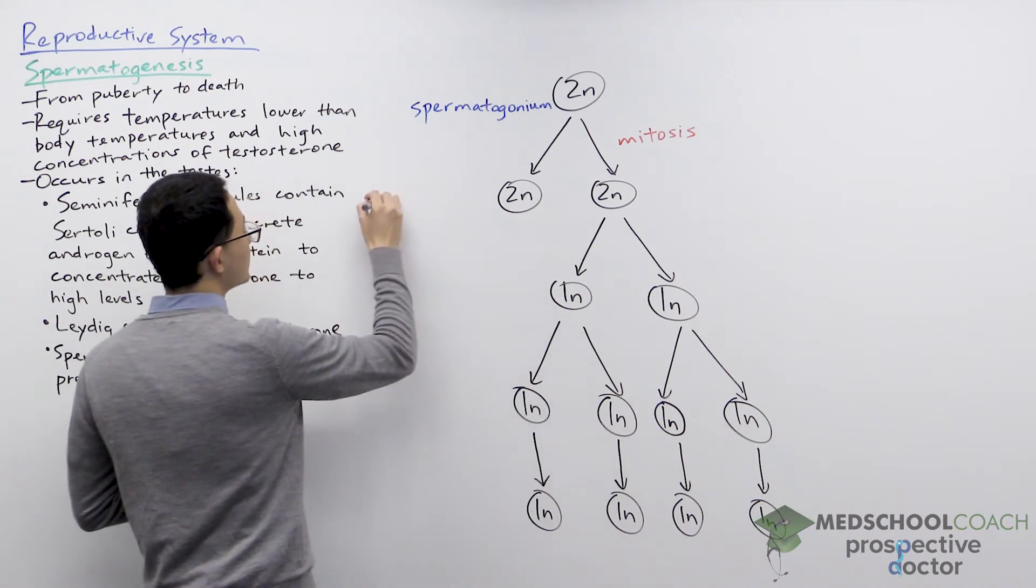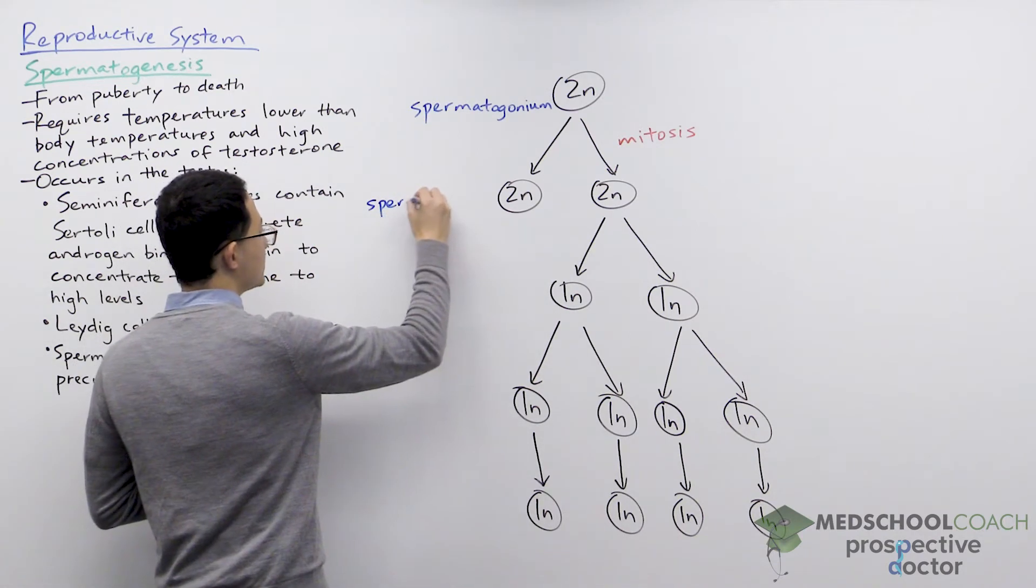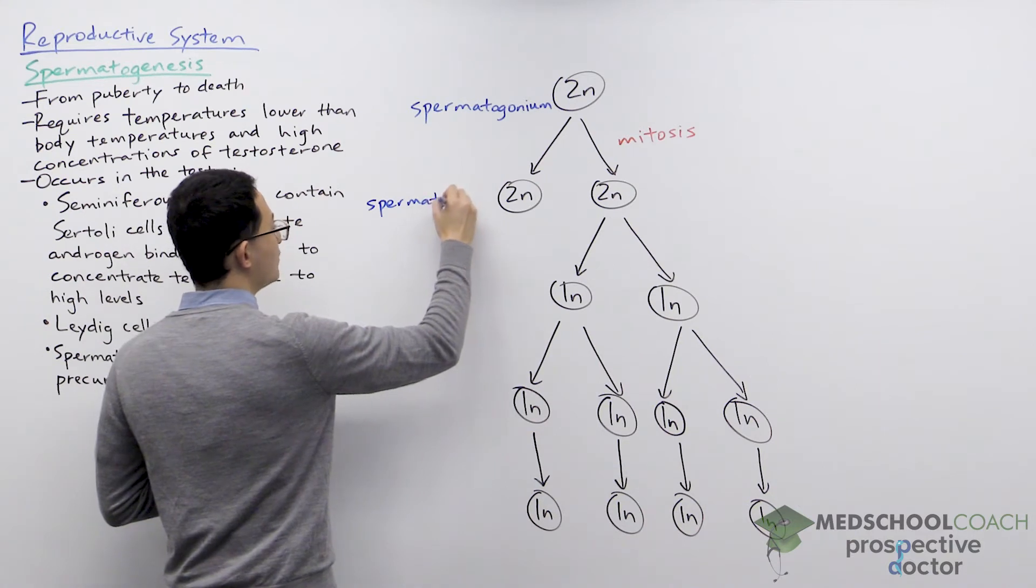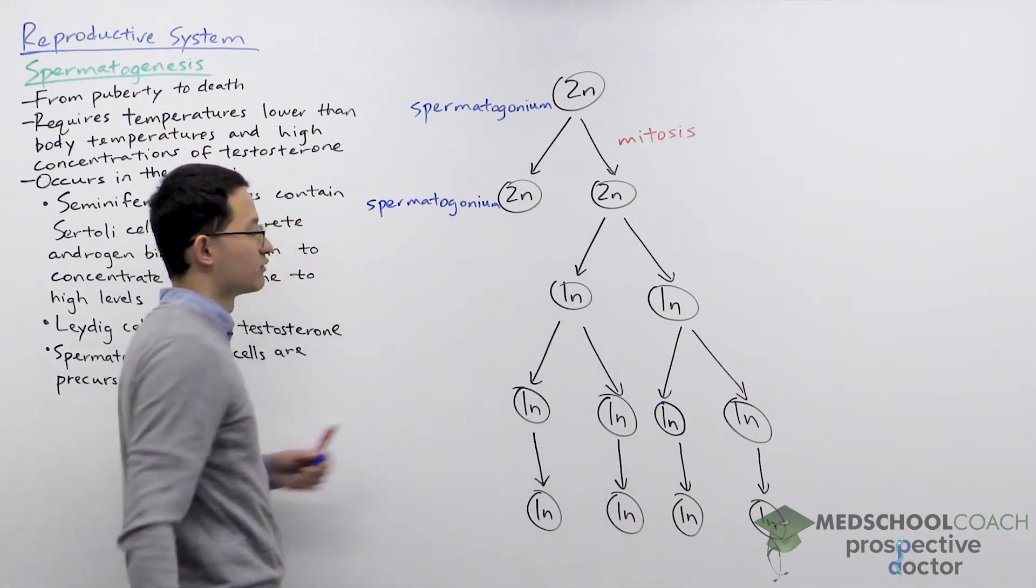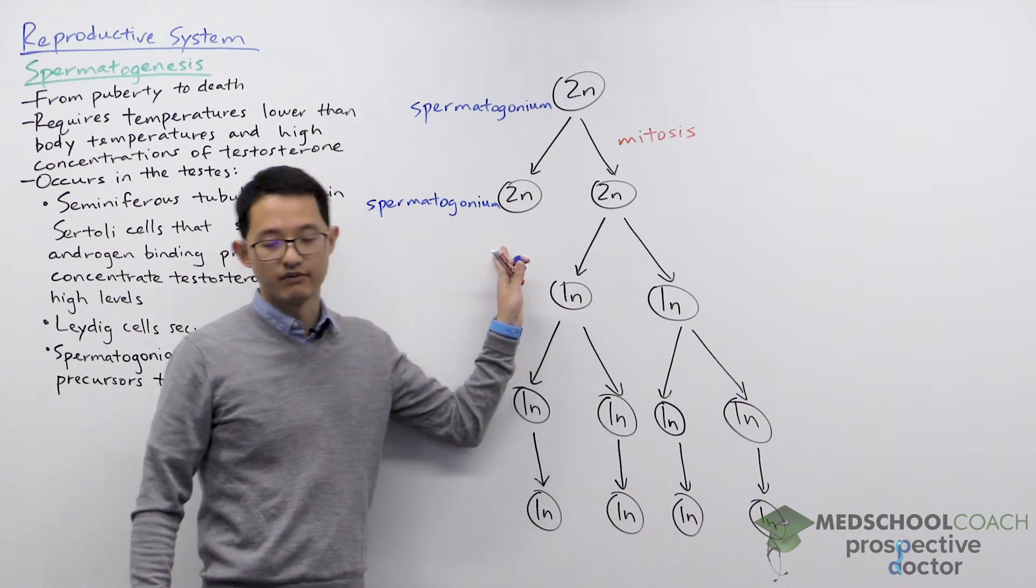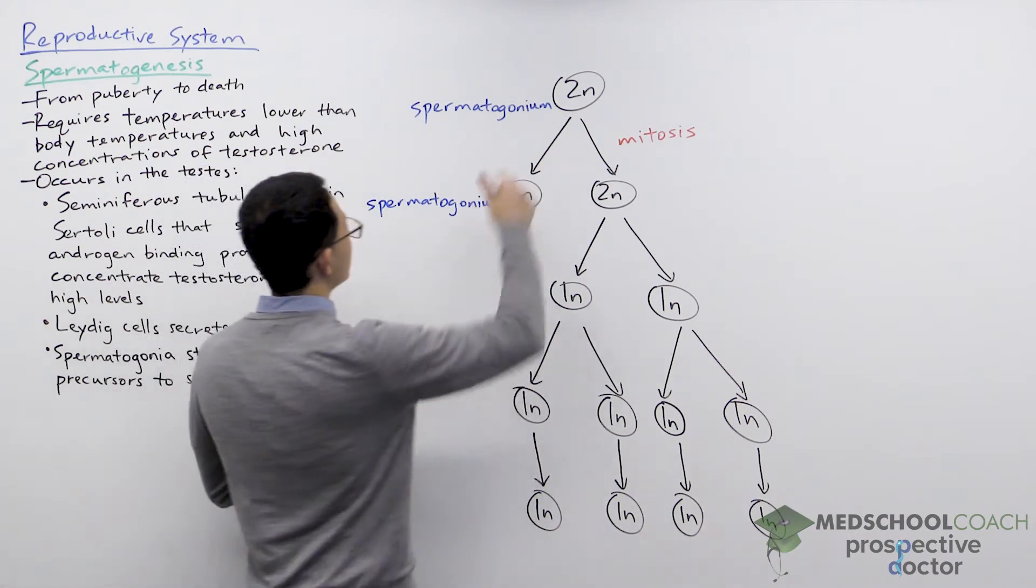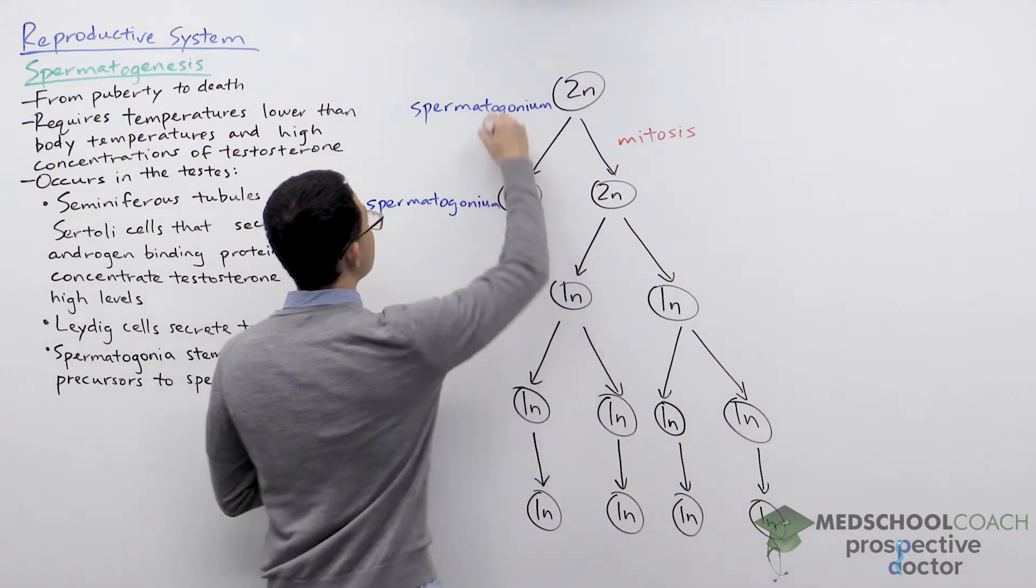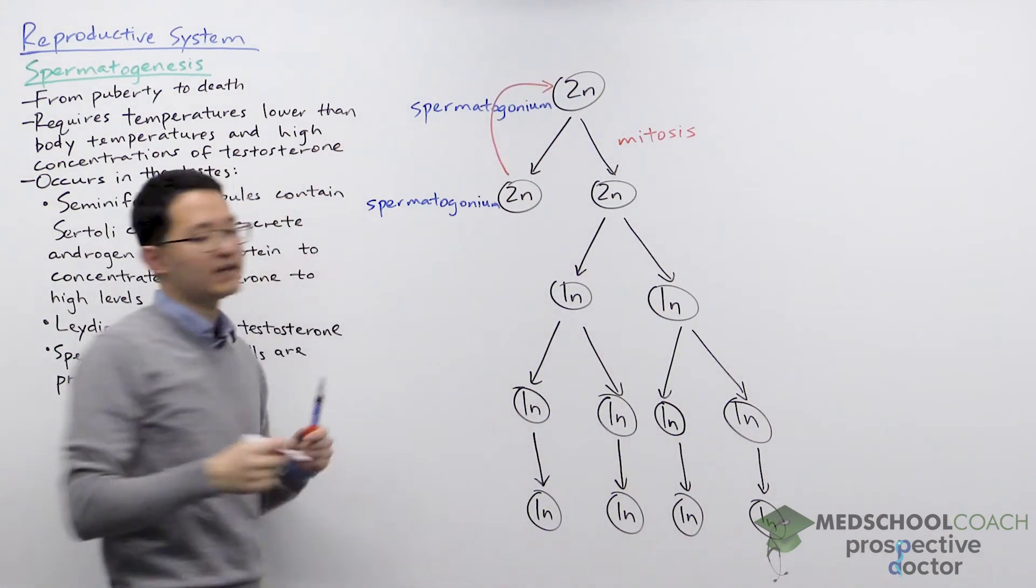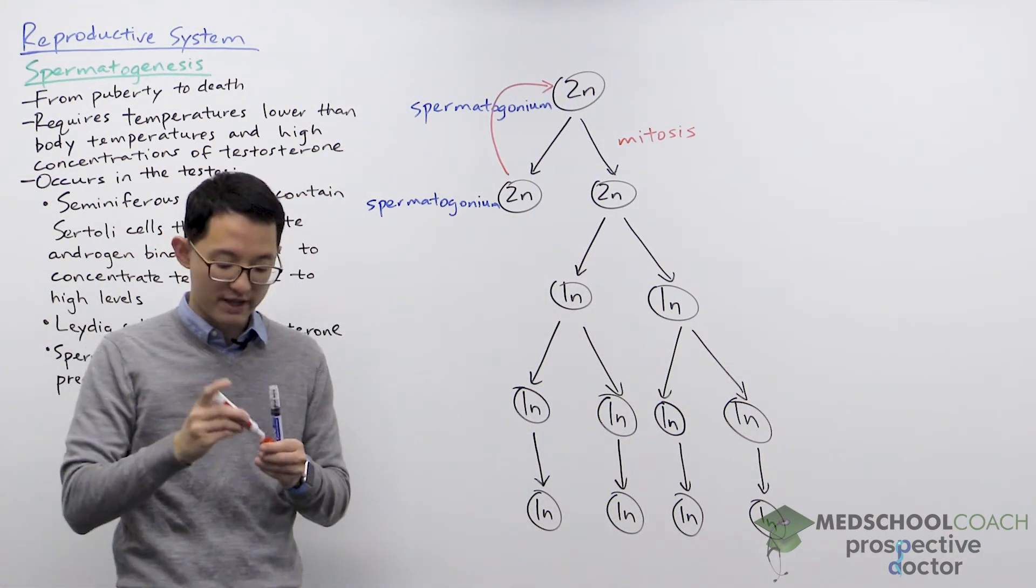This one on the left is going to continue as spermatogonium in order to replenish the supply of stem cells. So this will essentially go backwards and be able to continue this process of dividing to form more and more spermatogonium.